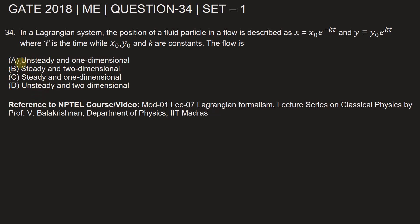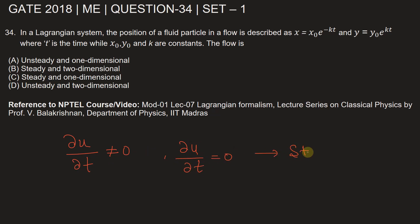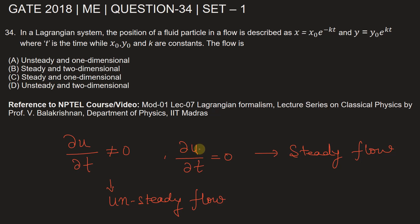We say the flow is unsteady when a parameter changes with respect to time. For example, if the change in velocity with respect to time is not equal to zero, the flow is unsteady. If du/dt equals zero, then the flow is steady. This applies not just to velocity in the x direction, but also y and z directions. If velocity in all directions does not change with respect to time, only then can we say the flow is steady.